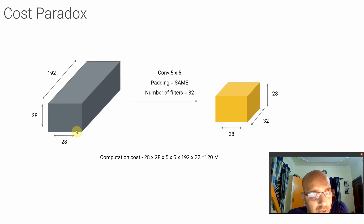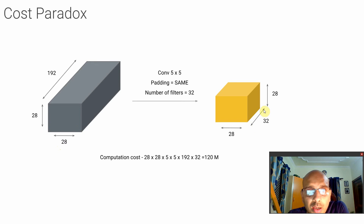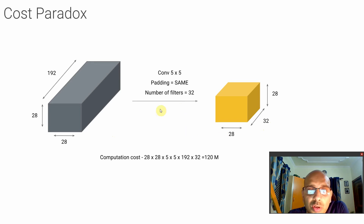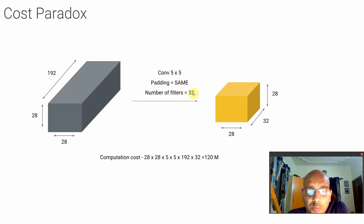In this slide, there's an input volume of 28 by 28 and 192 channels. The output volume is 28 by 28 with 32 channels. Typically a convolution of a certain filter size would be applied and the system would give you this kind of output. A typical choice could be to take a 5 by 5 filter with same padding and 32 number of filters.